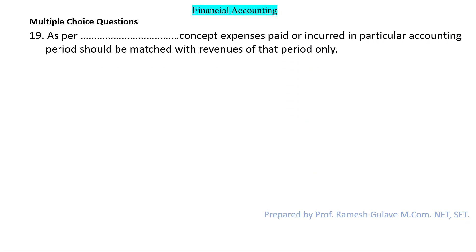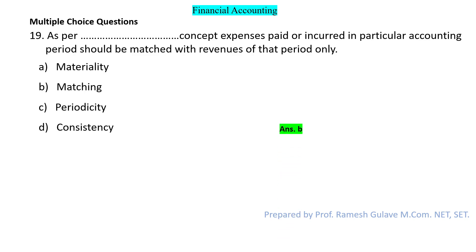The next question says: as per dash concept, expenses paid or incurred in a particular accounting period should be matched with revenues of that period. This is as per the matching concept. As per the matching concept, expenses paid or incurred in a particular accounting period should be matched with revenues of that period only. So here option B is the right answer.